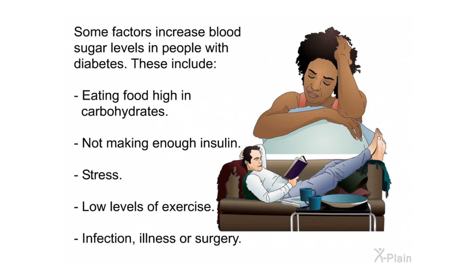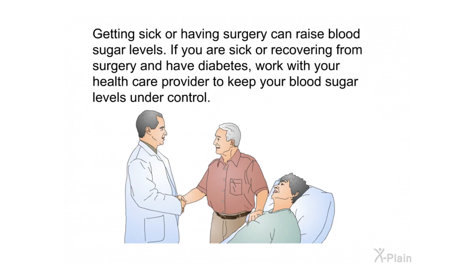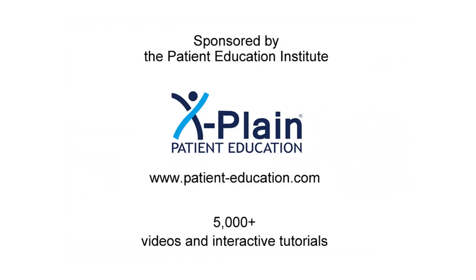Some factors increase blood sugar levels in people with diabetes. These include eating food high in carbohydrates, not making enough insulin, stress, low levels of exercise, infection, illness, or surgery. Getting sick or having surgery can raise blood sugar levels. If you are sick or recovering from surgery and have diabetes, work with your health care provider to keep your blood sugar levels under control.